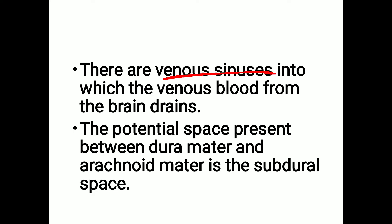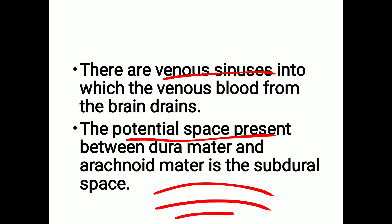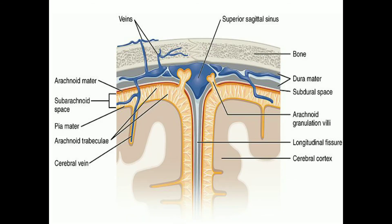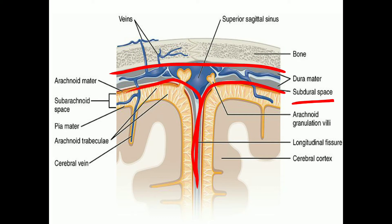From the venous sinuses, veins carry the blood away from the brain. There is a potential space between the dura mater and the arachnoid mater — below the dura mater — called the subdural space. Here you can see the subdural space: this is the outer layer and this is the inner layer of the dura mater, and the subdural space is the space between the dura mater and the arachnoid mater.